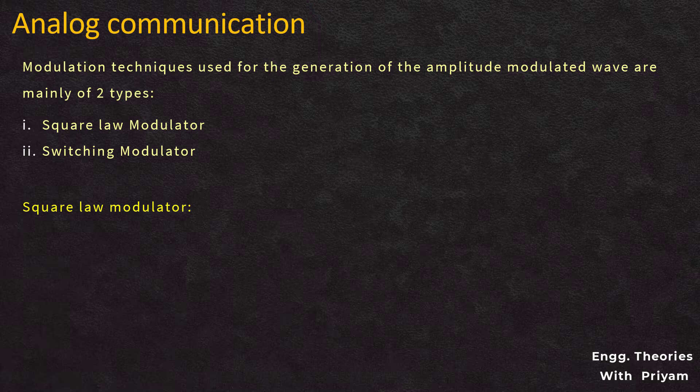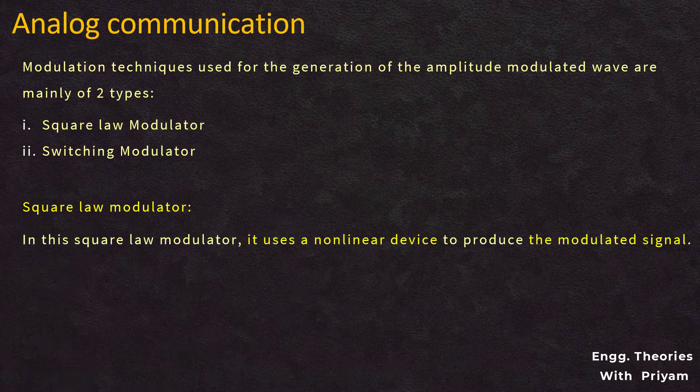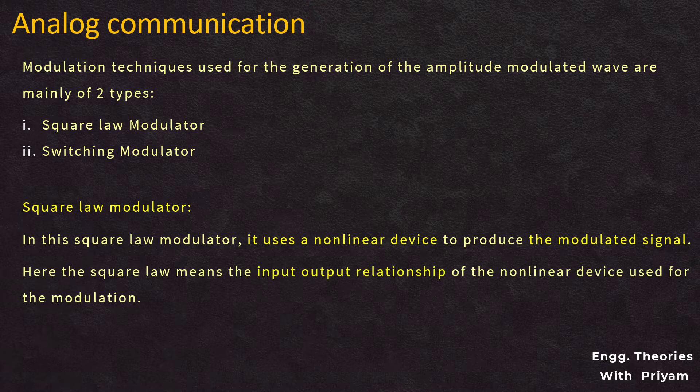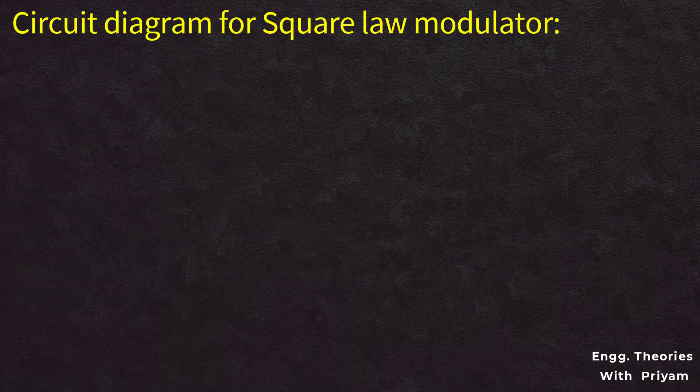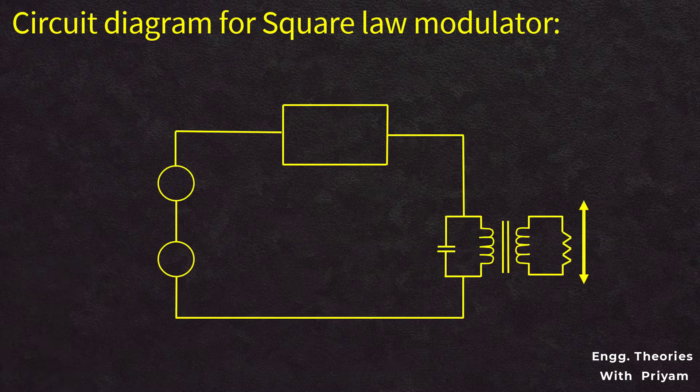A square law modulator, used for the generation of the amplitude modulated signal, depends on the use of a nonlinear device or a square law device such as a diode. If we ignore the higher-order terms generated by a square law device, the input-output characteristics of the modulator can be represented by a square law. Let us see the circuit diagram for the square law modulator.